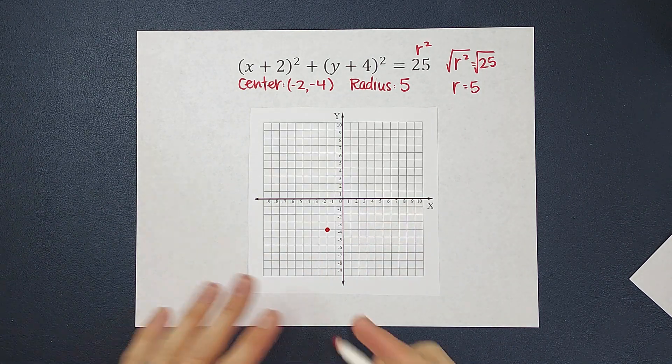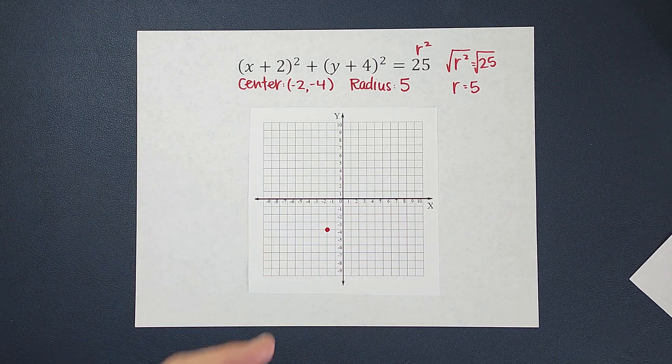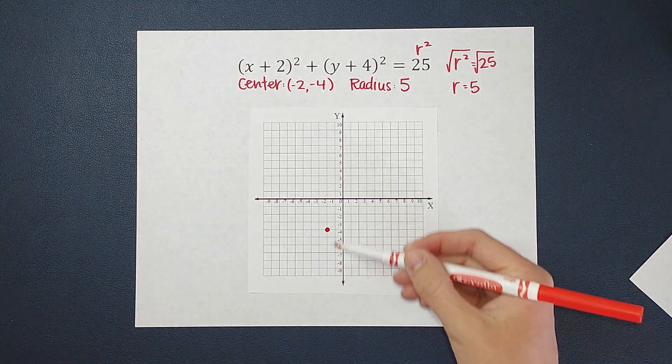So I know that from this line, I go out 5 in every direction and that's going to be my circle. So the easiest way for us to do it is to go up, down, right, and left.